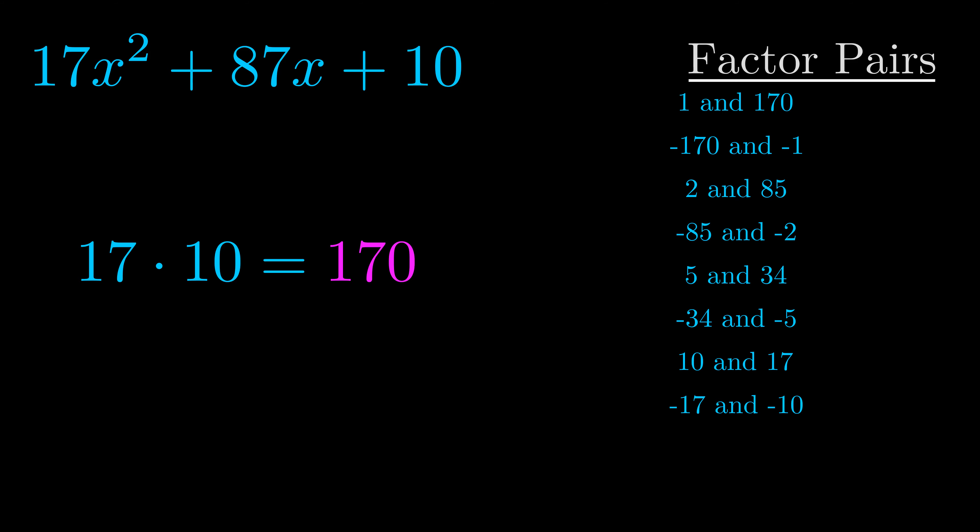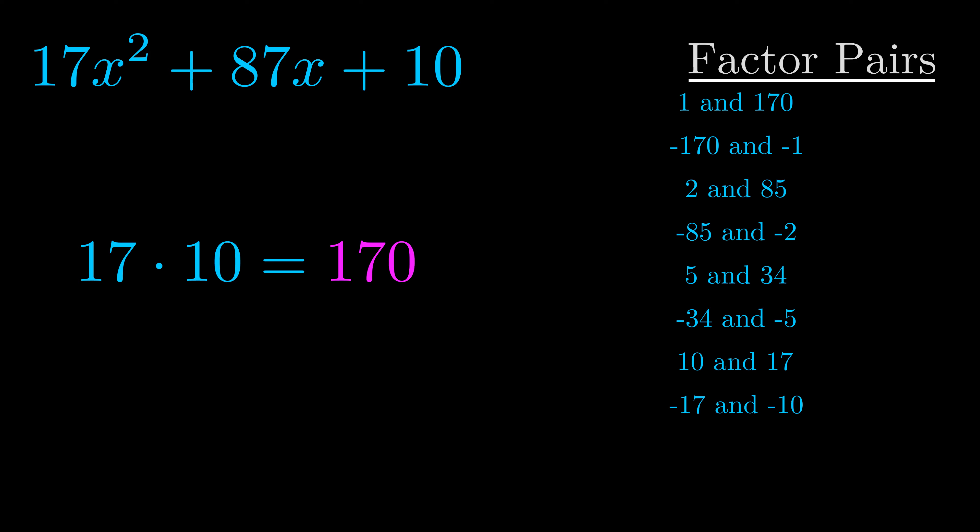Now once you have these factor pairs, the goal is to find which of these pairs adds to the b value. The b value is the coefficient on the x term, that's the middle term, the one that we haven't done anything with yet. And really this is the only factor pair that we need.